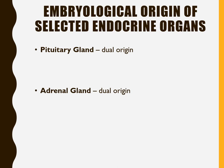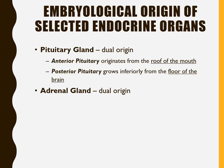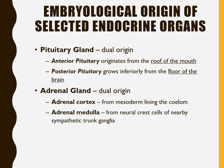Regarding embryological development, glands with dual portions are interesting because their different origins explain their different functions. The anterior pituitary originates from epithelial tissue rising from the roof of the mouth, whereas the posterior pituitary grows inferiorly from the floor of the brain — which is why it's nervous tissue. Similarly, the adrenal cortex originates from the lining of the coelom — mesoderm — while the adrenal medulla comes from neural crest cells near a sympathetic trunk ganglion, explaining why its cells are like modified sympathetic neurons.